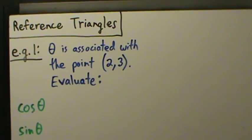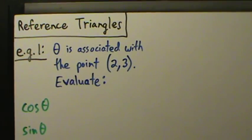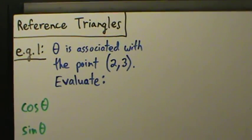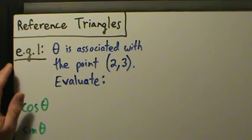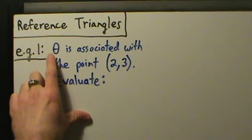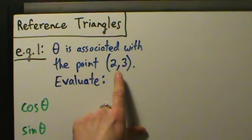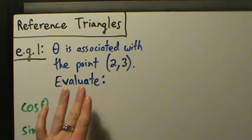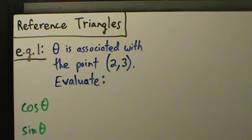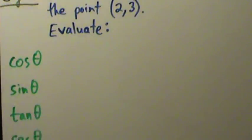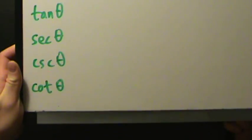Let's start doing some examples with reference triangles. Here's example one: theta, this angle theta, is associated with the point (2, 3), and we want to evaluate all six trig functions of theta.